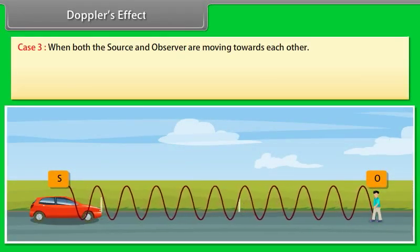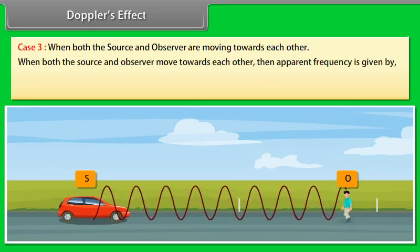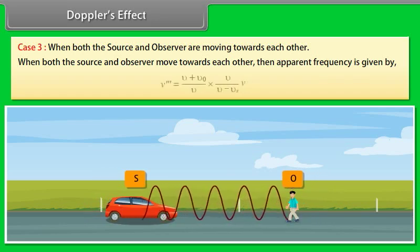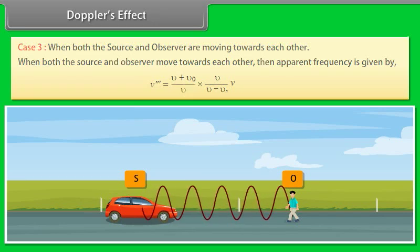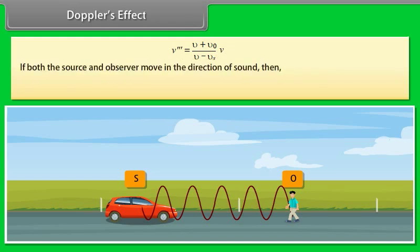Case 3 — When both the source and the observer are moving towards each other, the apparent frequency is given by N''' = ((V + V0) / (V − Vs)) × N. If both the source and observer move in the direction of sound, then N''' = ((V − V0) / (V − Vs)) × N.